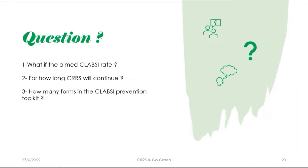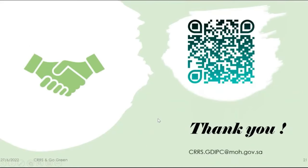We hope that all of you have gained an overview of the strategy and what Go Green means. We look forward to more beneficial sessions in the coming days. Thank you for your attendance and participation. This is the official email of the strategy for any inquiries not found on the website, and this is the barcode for the GDIPC website where you will find all the forms and details. Just contact us through this email. Thank you.